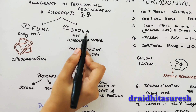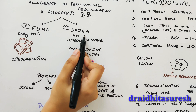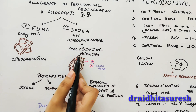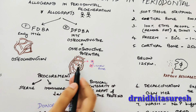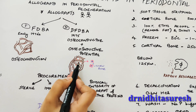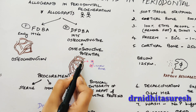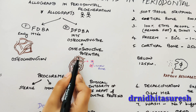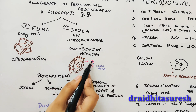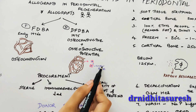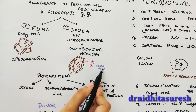DFDBA works on the principle of both osteoconduction and osteoinduction. DFDBA contains bone inductive proteins called BMPs, which induce mesenchymal cells to form pre-osteoblasts and osteoblasts and then form new bone.